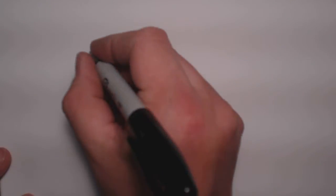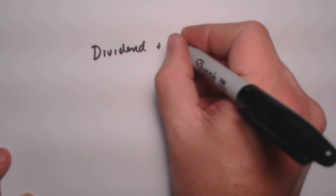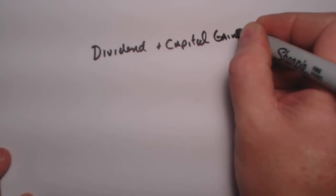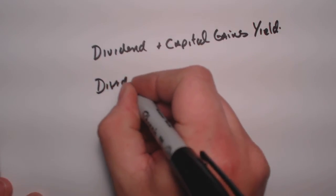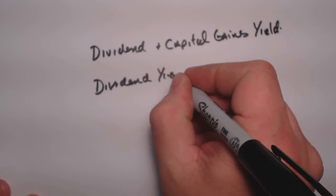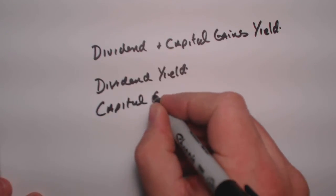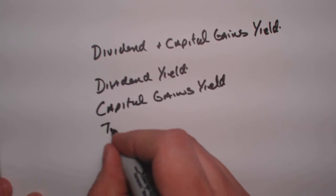Hello and welcome. We are here talking about the problem with dividend and capital gains yields. We're going to be looking for three different items: the dividend yield, the capital gains yield, and the total yield.